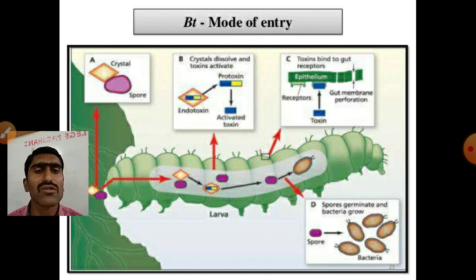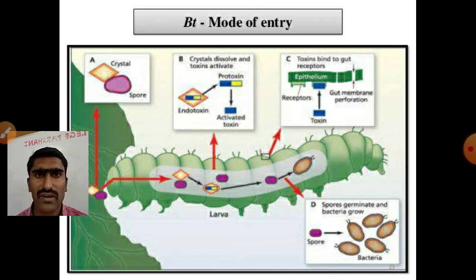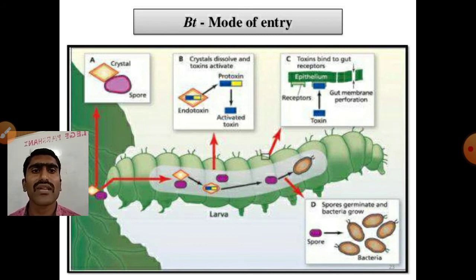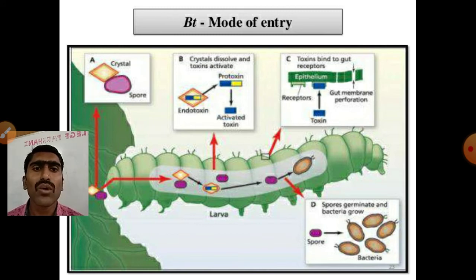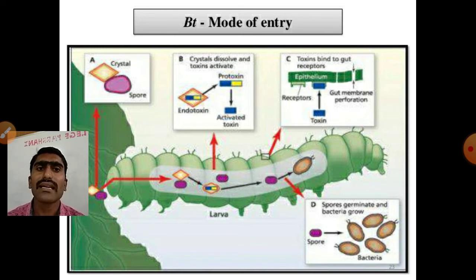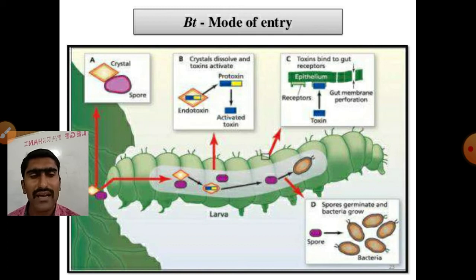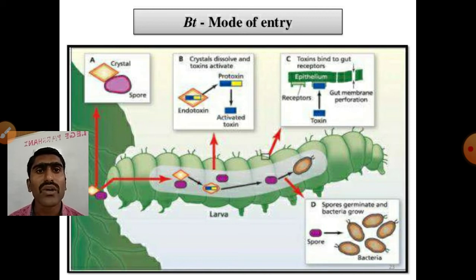Here in this slide is the mode of entry of Bt genes. Taking the example of cotton crop — Bt cotton is also a genetically modified cotton crop which has resistance against the pink bollworm. The major pests that attack cotton are pink bollworm, American bollworm, and spotted bollworm. These are tissue eaters that eat the leaf and tissues of cotton, blocking photosynthesis. For this problem, a new cotton variety — Bt cotton — has been developed.